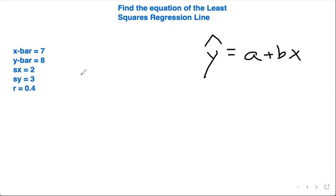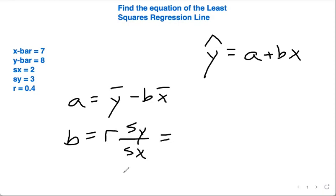The formula for a is going to be y-bar minus b times x-bar. So in order to find a, the y-intercept, we need the slope b, and b is going to be r times the standard deviation of y over the standard deviation of x.